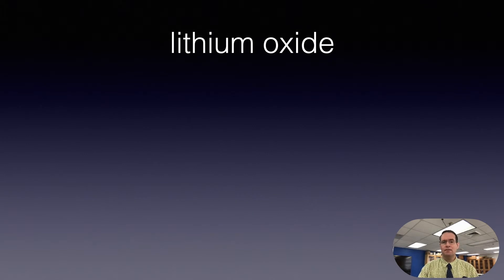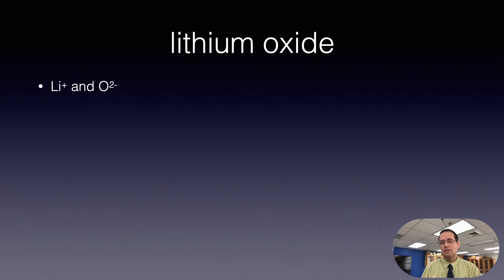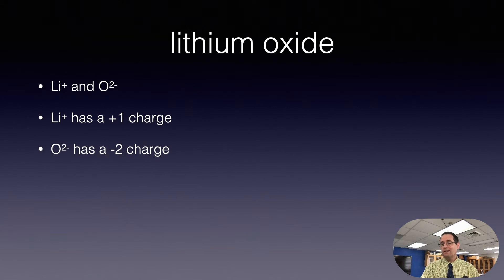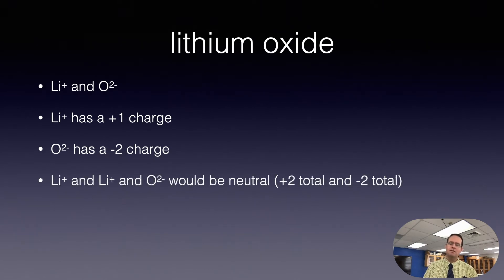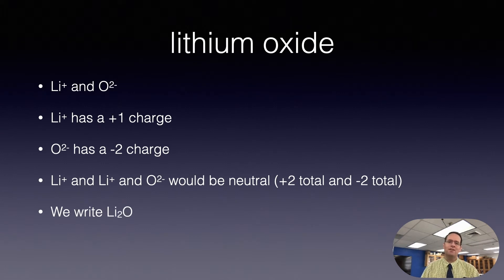Let's talk about lithium oxide. Ideally you would have already watched my video on the names of ions and charges, but let me show you how the charges work here. Lithium is +1 in charge and oxygen is −2 in charge. You need two lithium ions to balance one oxide ion: two pluses total and one minus two total, so +2 and −2 make it electrically neutral, and we write the formula Li₂O.